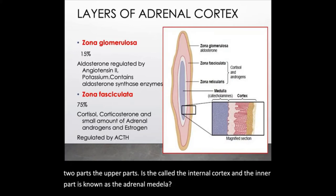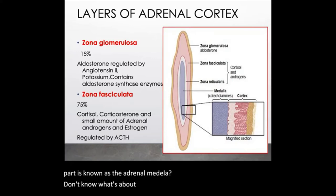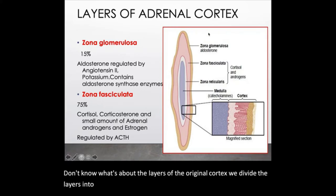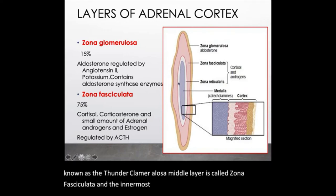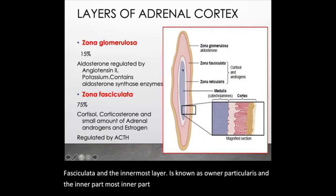Now, what about the layers of the adrenal cortex? We divide the layers into three parts. The outermost layer is known as the zona glomerulosa, the middle layer is called zona fasciculata, and the innermost layer is known as zona reticularis. The most inner part of the whole adrenal gland is known as the medulla, which is different from the adrenal cortex.